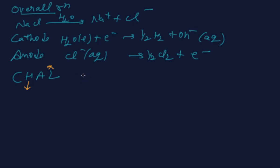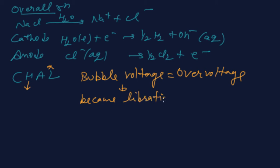That is called the bubble voltage, or overvoltage. What is this? This is because liberation of oxygen is a kinetically slow reaction.